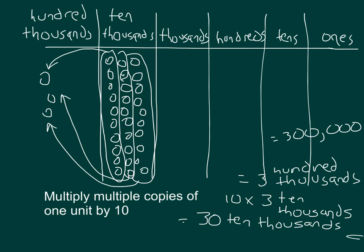So what we've done is, when we multiply multiple copies — we had three ten thousands there — by ten, we get a number ten times as large.